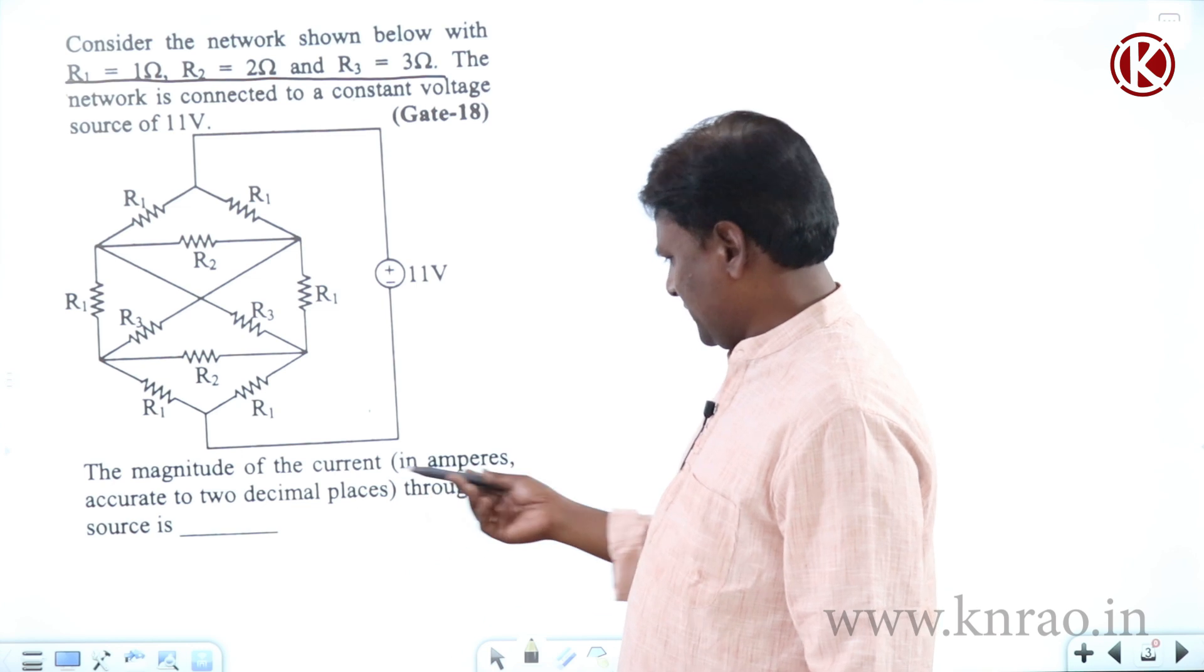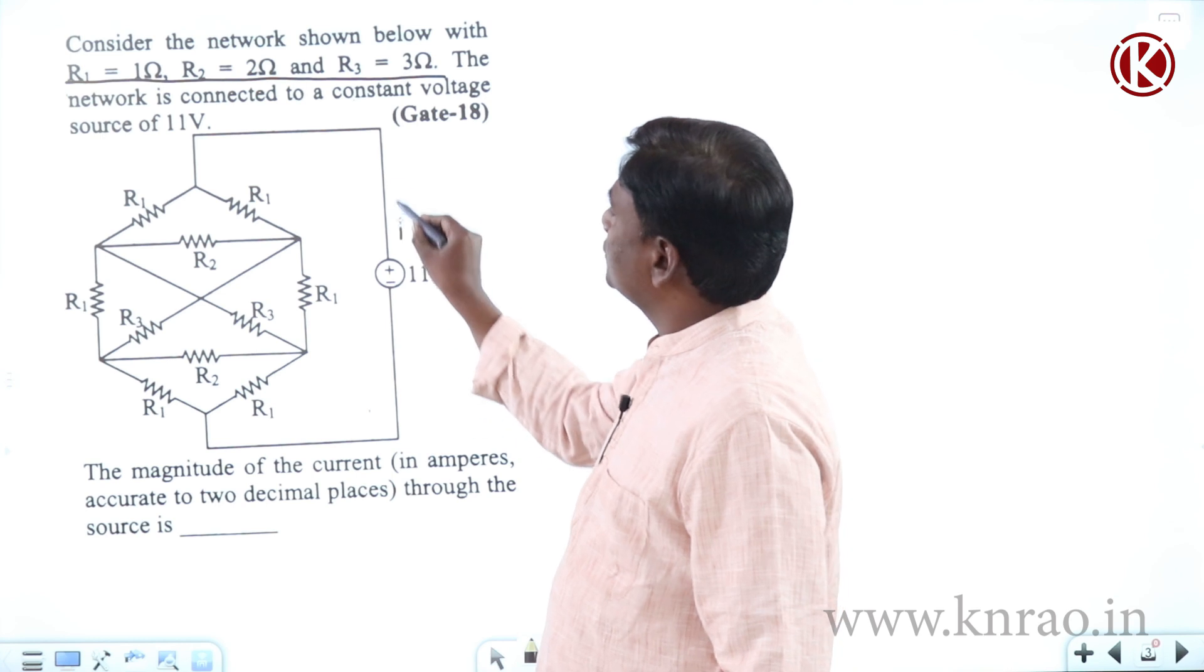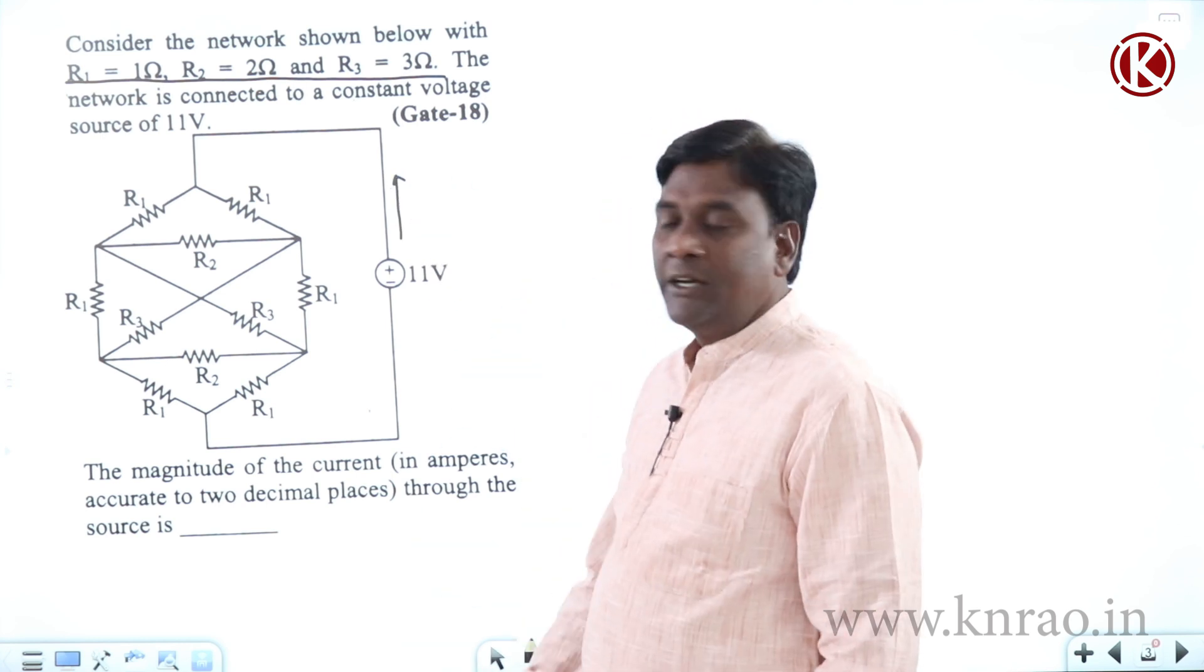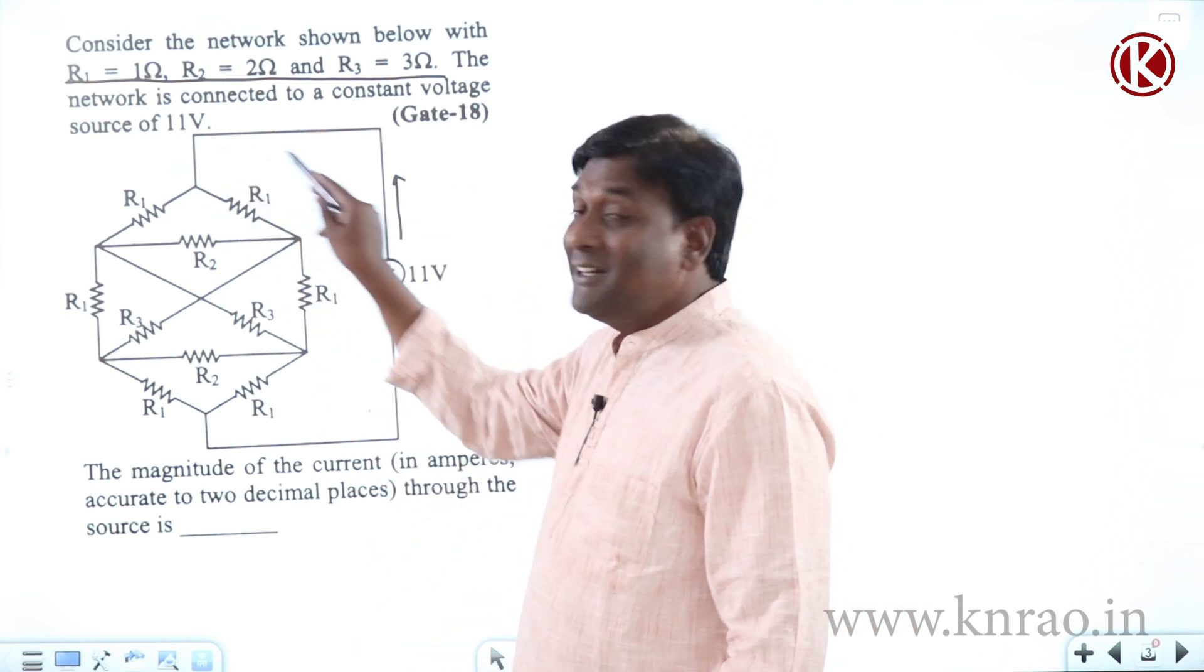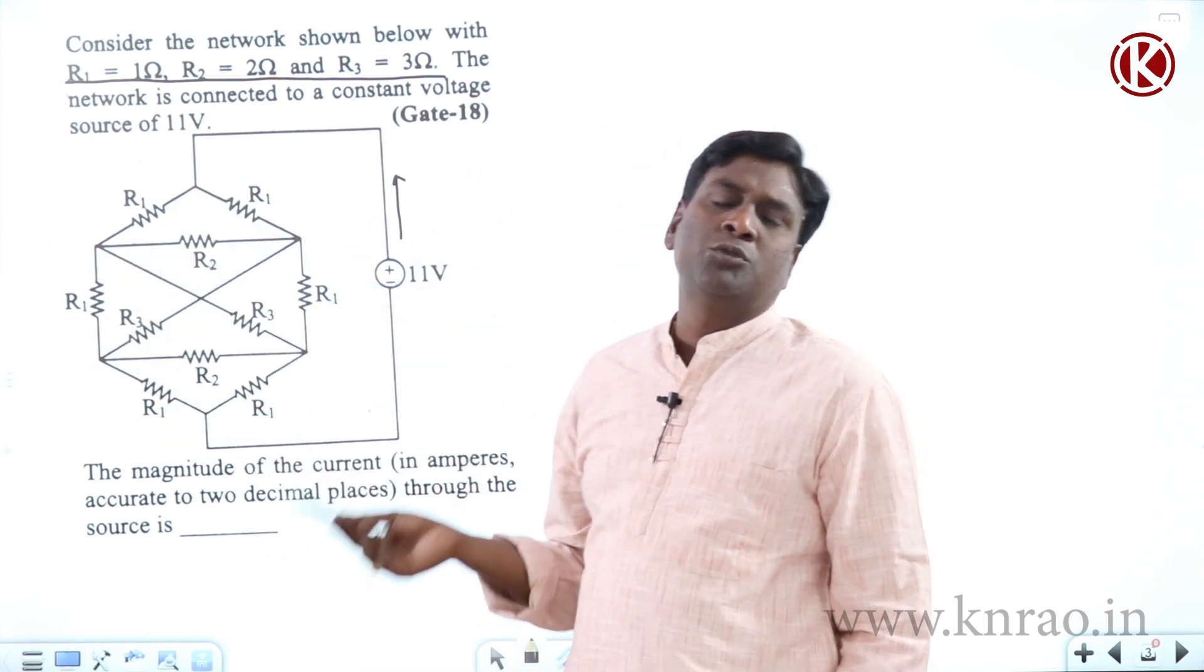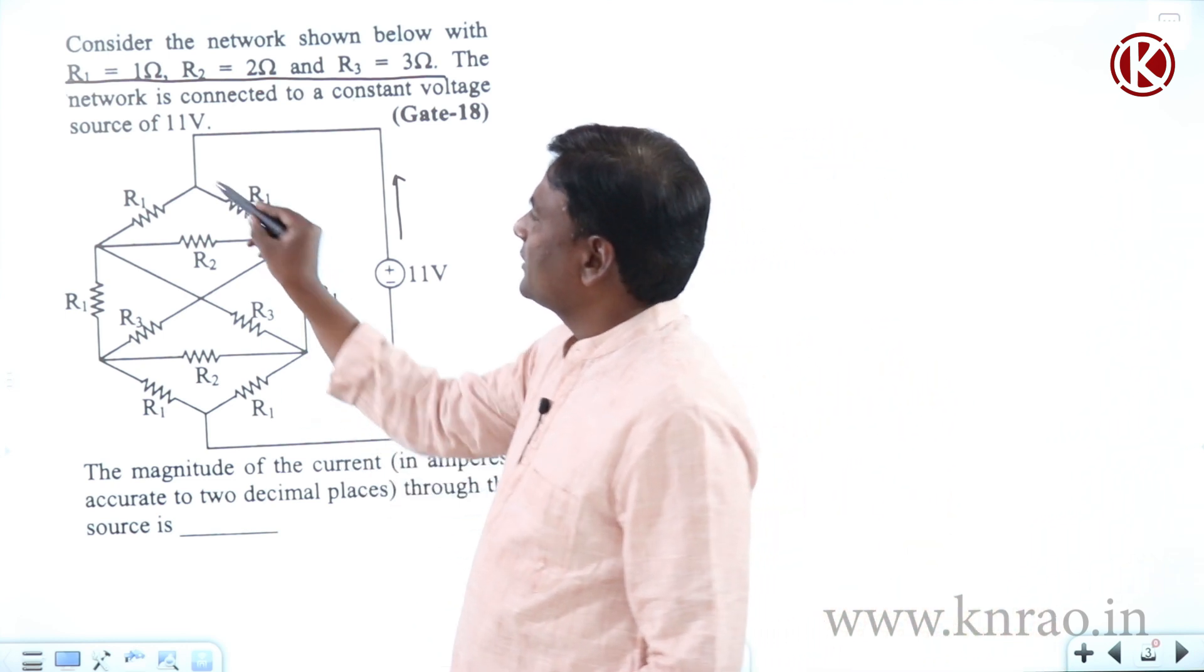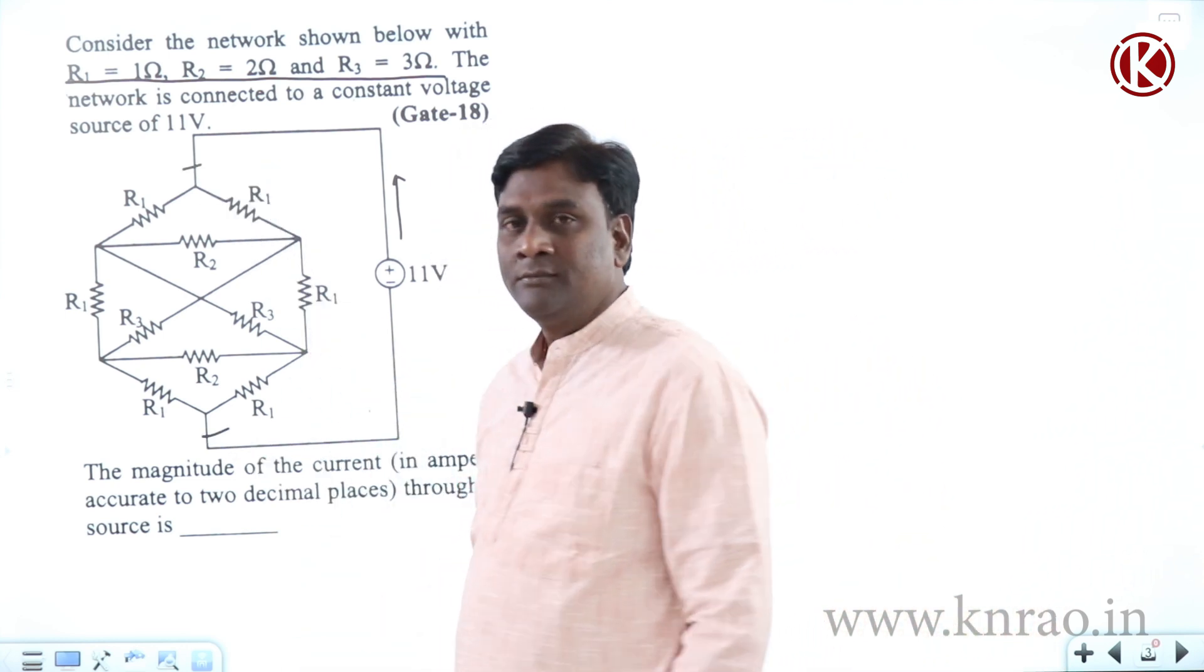The magnitude of the current in amperes, accurate to two decimal places through the source. So current flowing through this we'd like to find. Now, in order to find that, if we can find R equivalent across this, such that 11 by R equivalent is going to be the answer. Let us try to find out R equivalent across this.